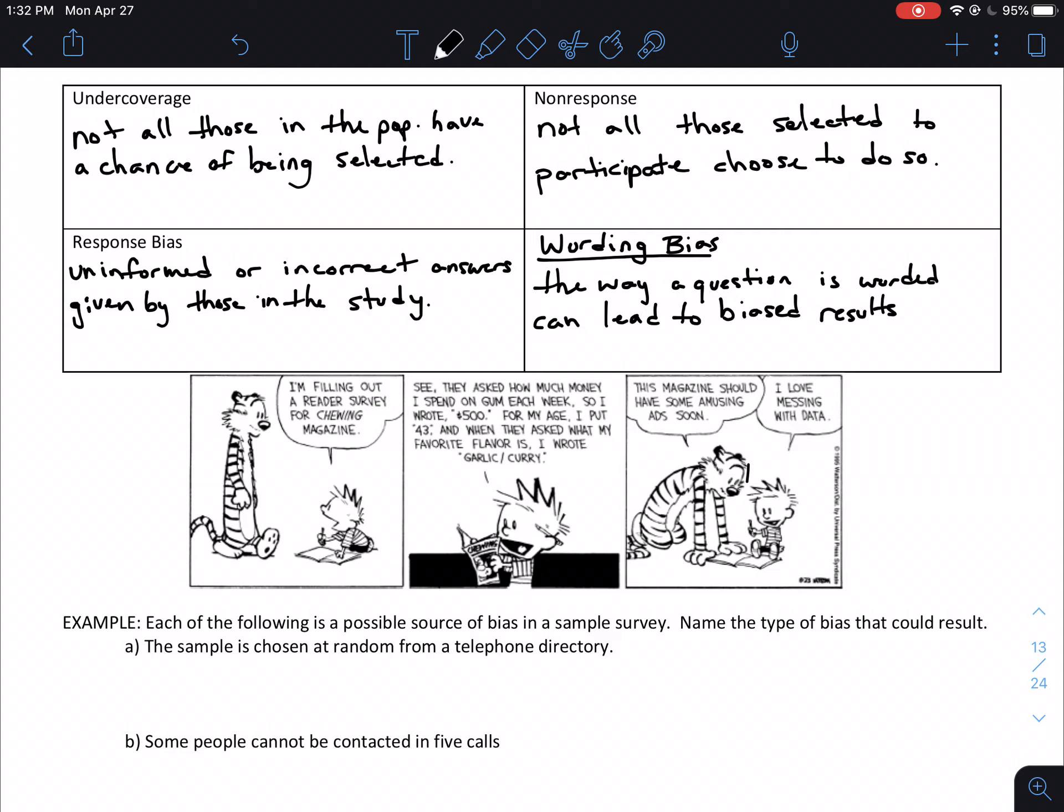The third type of bias that is present is response bias. So with response bias, that's where you get uninformed or incorrect answers given by those in the study. To give an example of response bias, let's maybe think about doing a study of how students feel about the parking lot situation. If you asked freshmen about that, they might give you some response bias just because as a freshman, you're probably not parking in the lot most likely.